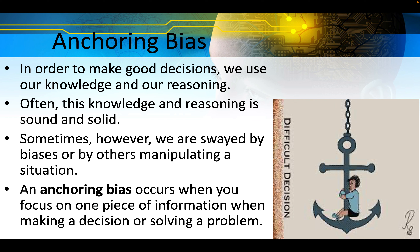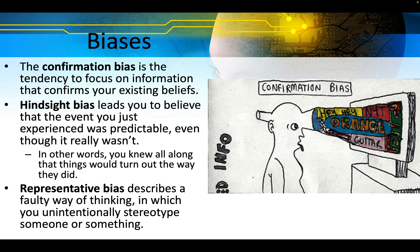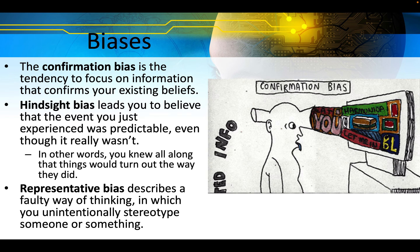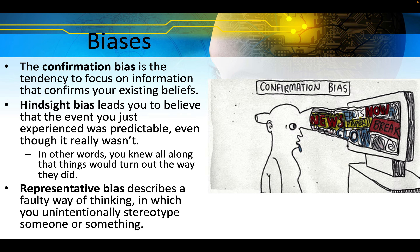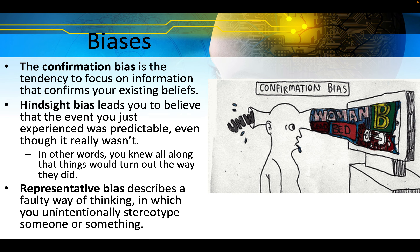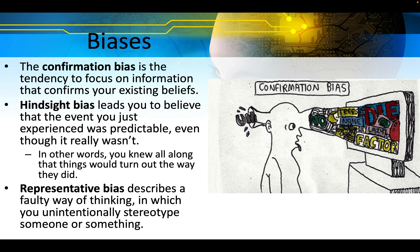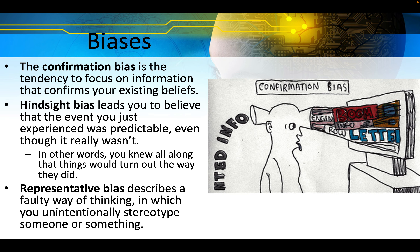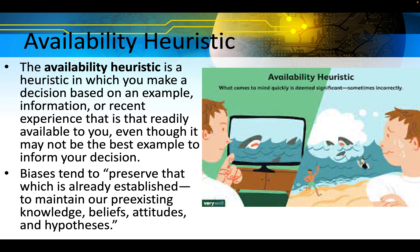An anchoring bias occurs when you focus on one piece of information when making a decision or solving a problem. The confirmation bias is the tendency to focus on information that confirms your existing beliefs. Hindsight bias leads you to believe that the event you just experienced was predictable even though it really wasn't — in other words, you knew all along that things would turn out the way they did. Representative bias describes a faulty way of thinking in which you unintentionally stereotype someone or something. The availability heuristic is a heuristic in which you make a decision based on an example, information, or recent experience that is readily available to you, even though it may not be the best example to inform your decision. Biases tend to preserve what is already established — maintaining our pre-existing knowledge, beliefs, attitudes, and hypotheses.